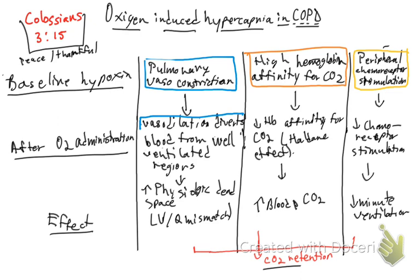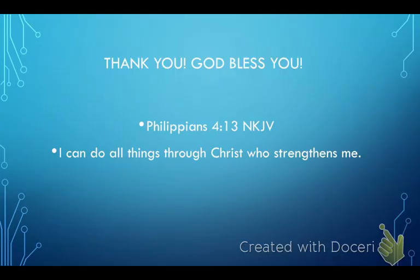And the last one: in baseline hypoxia you get peripheral chemoreceptor stimulation; give oxygen and chemoreceptor stimulation decreases, and the effect is decreased minute ventilation. All three things together lead to CO2 retention. Thank you so much for watching, and remember we can do all things through Christ. God bless you.